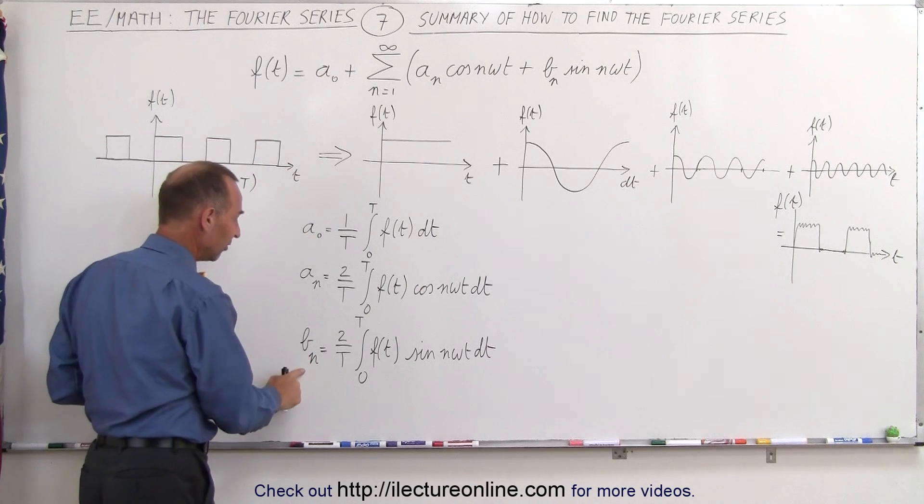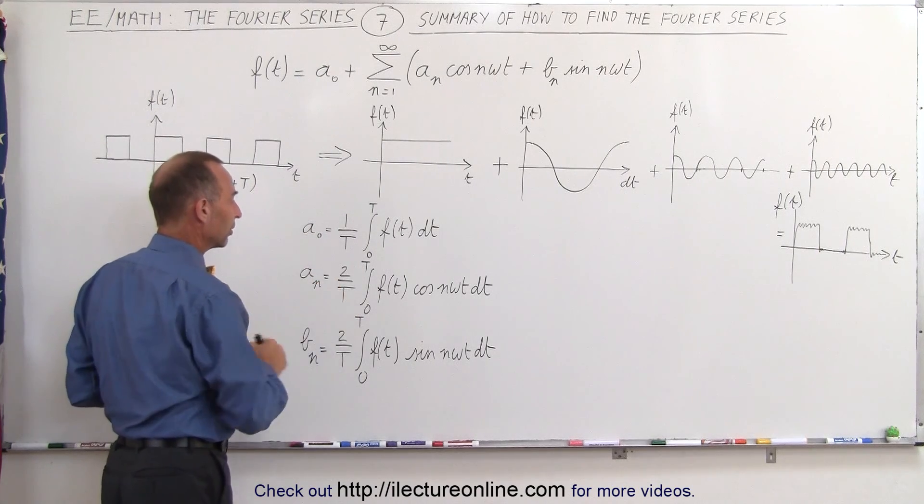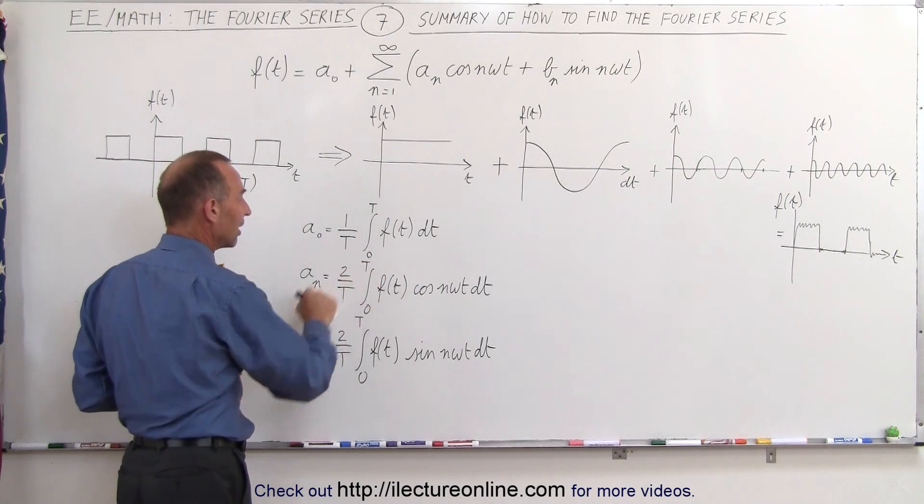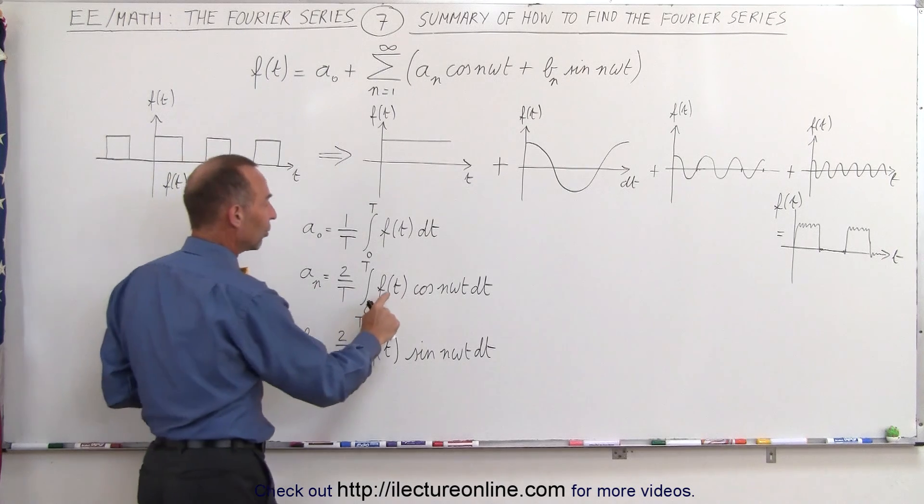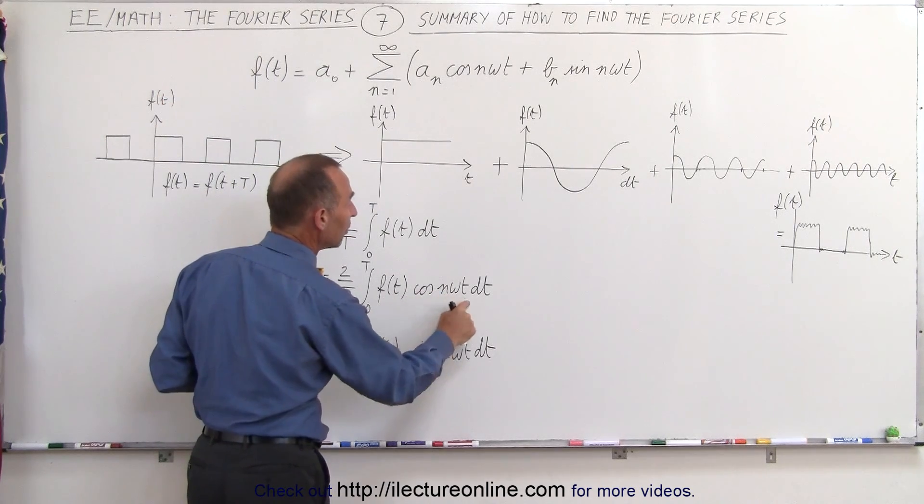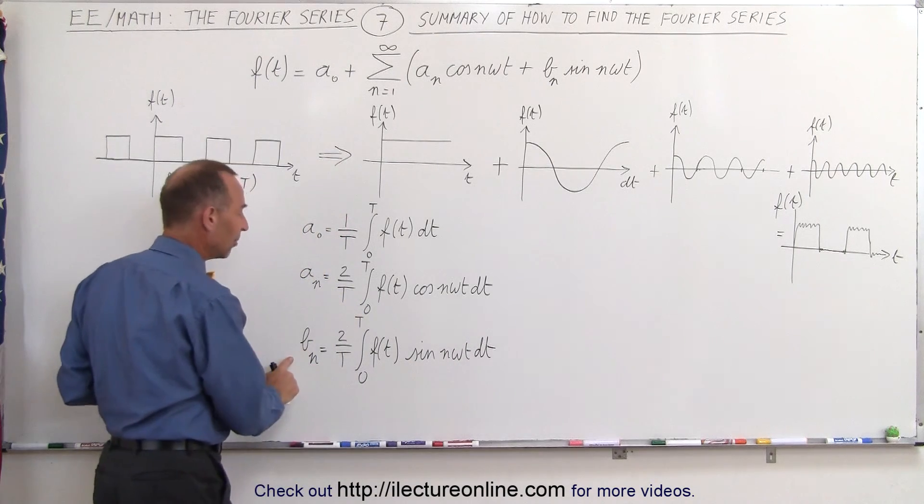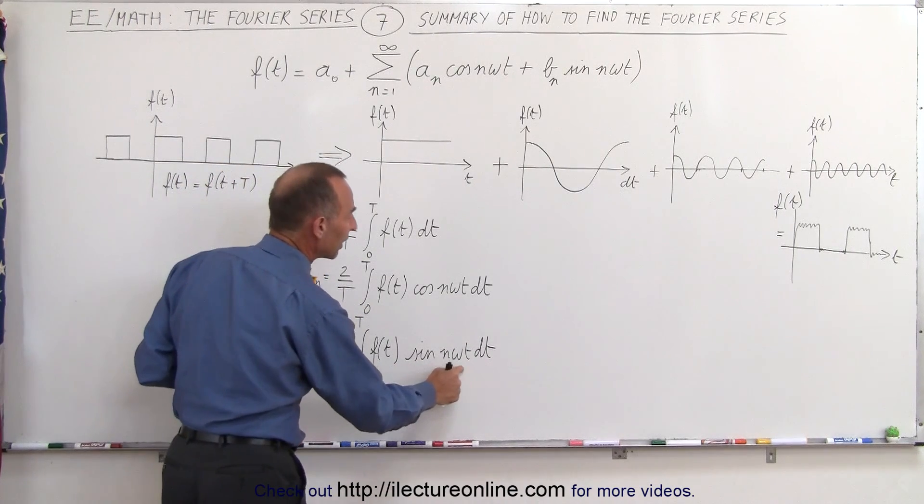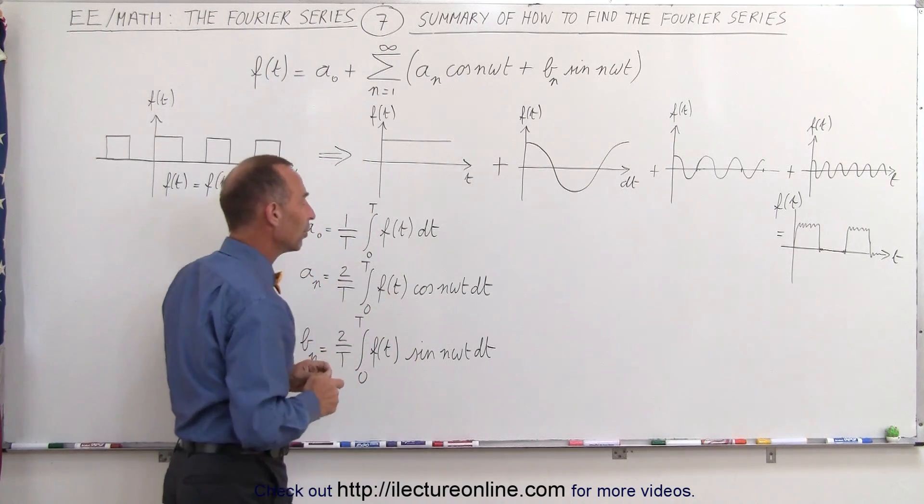For a sub n and b sub n, it's 2 over the period times the integral from 0 to T. In the case of a sub n, it's the original function f of t times the cosine of n omega t dt, and for the b sub n is f of t times the sine of n omega t dt.